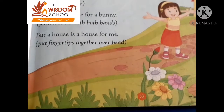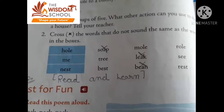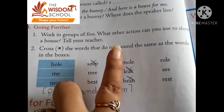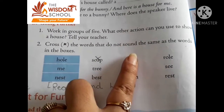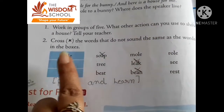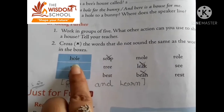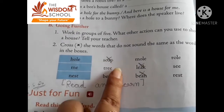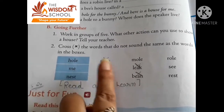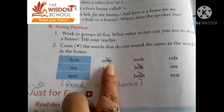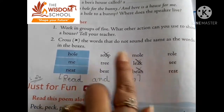Open page number 34. Cross the words that do not sound the same as the words in the boxes. These are rhyming words — whose rhyme is different, we have to cross that particular word. Hall — Soap, Mall, Roll — whose rhyming is different? Soap.